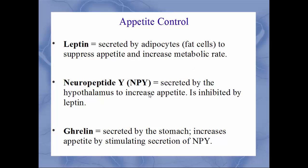The next hormone is NPY — neuropeptide Y. This is secreted by the hypothalamus, the part of the brain, to increase appetite. And of course this would be inhibited by leptin. So leptin will decrease appetite, NPY will increase appetite. The third hormone is ghrelin. This is secreted by particular cells of the stomach and will increase appetite by stimulating NPY.